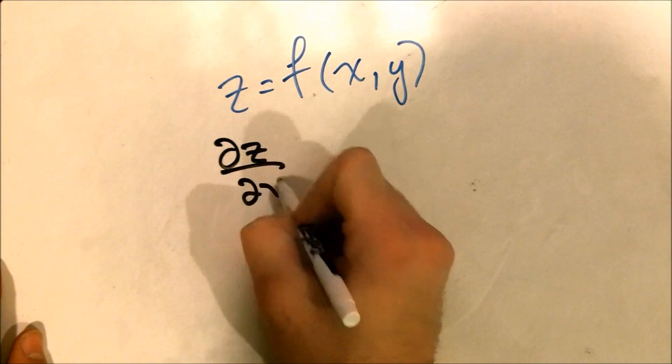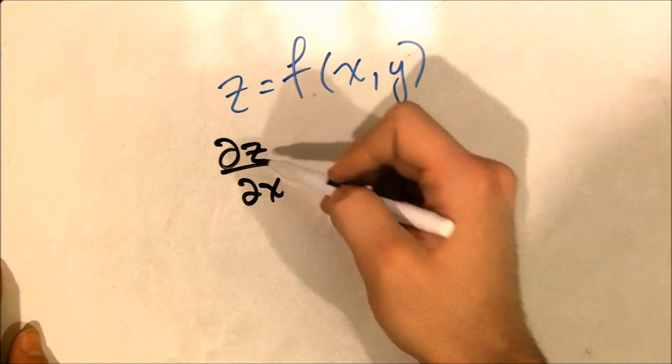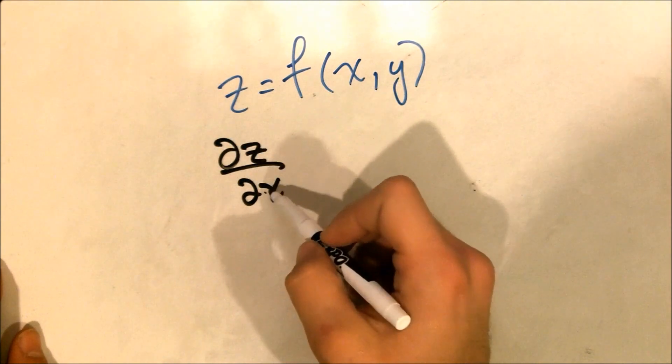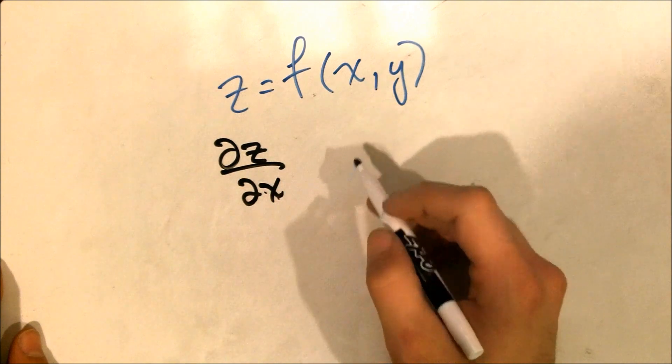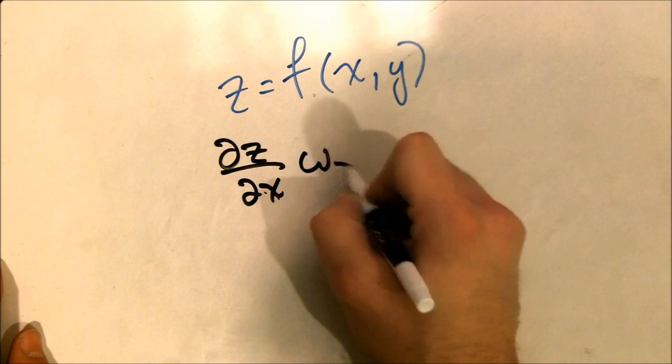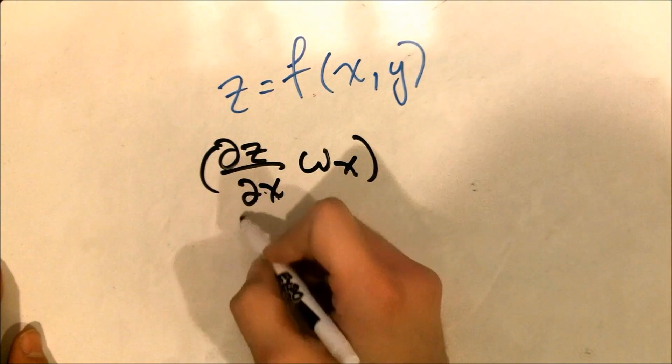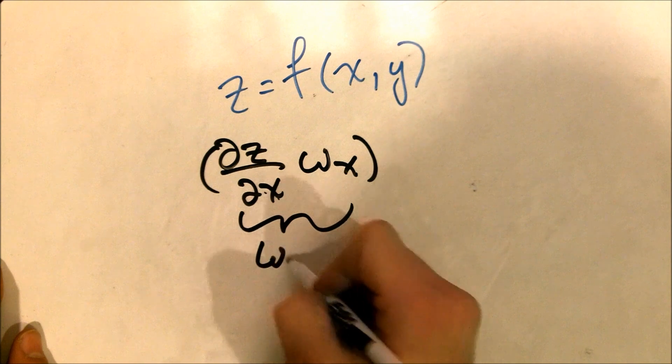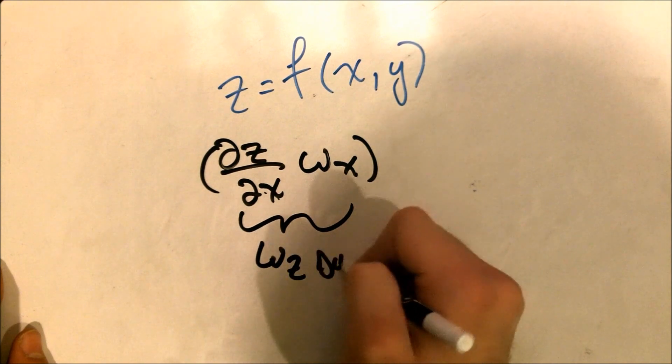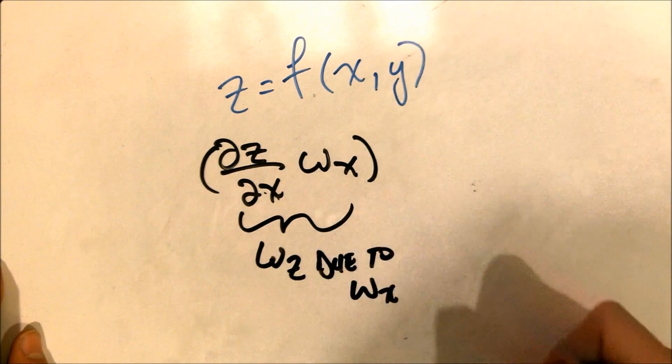And what this denotes is that this is a function of more than one variable, but we're taking this derivative with respect to X only. And we're holding the other things constant. And we would say del Z by del X times the uncertainty in X is going to be the total uncertainty in Z due to the uncertainty in X.